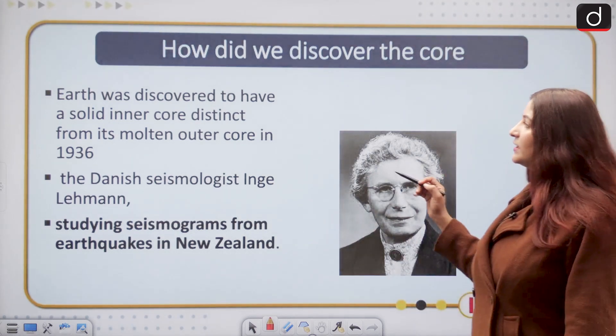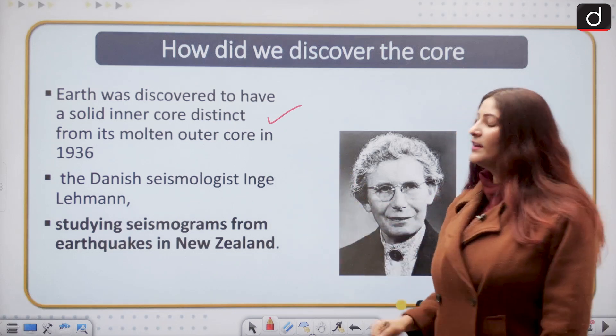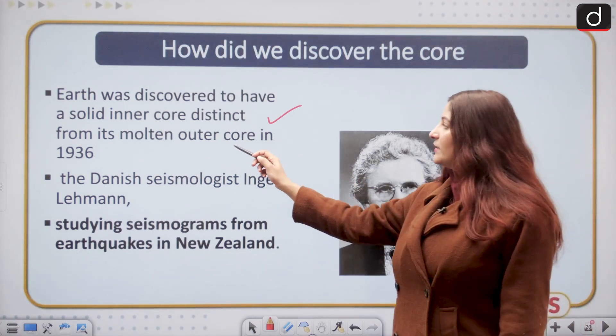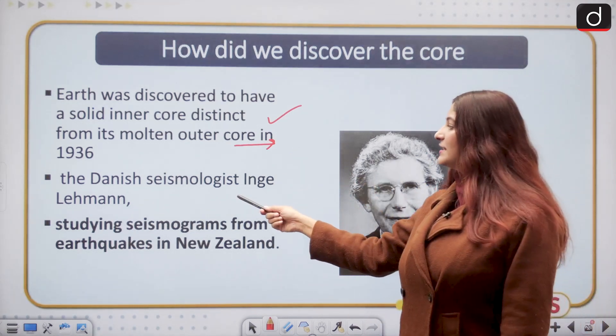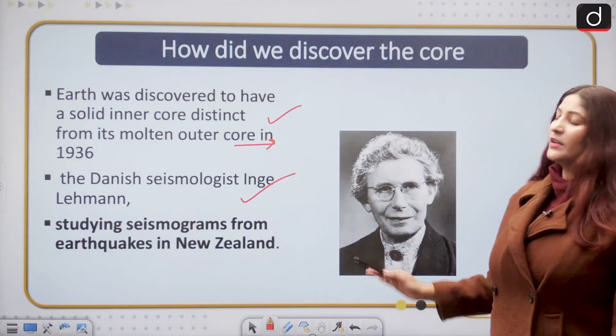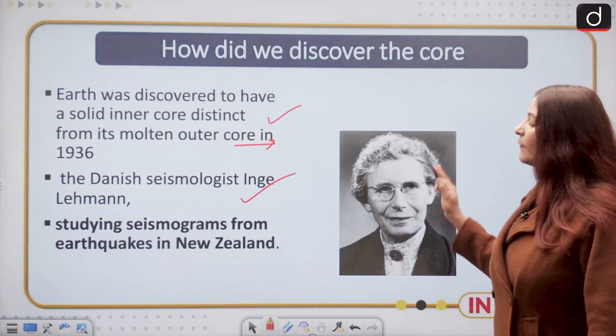How did we get hold of the core? Earth was discovered to have a solid inner core from its molten outer core only in 1936 by the Danish seismologist Inge Lehmann. She discovered it while studying seismograms of earthquakes in New Zealand.